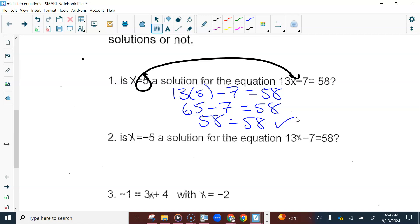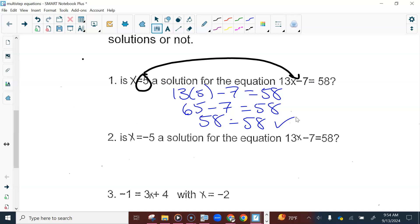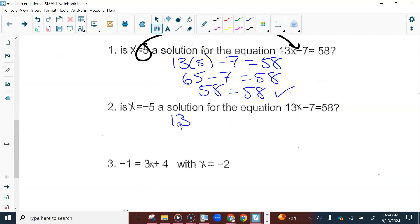Now, just for giggles, for number 2, we just solved, we simplified. We know that 5 is the solution. So negative 5 should not be the solution, but we're still going to check it. Same process except this is going to give us a negative 65. And when I subtract negative 65 and 7, I would get negative 72. And that does not equal 58. So this is not a solution.